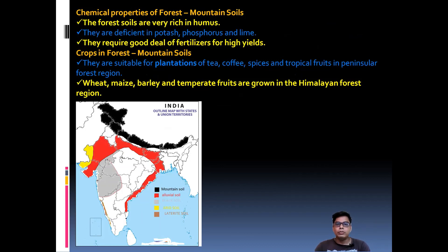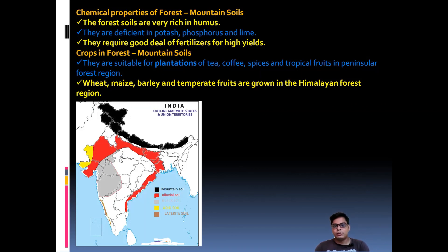Crops in forest and mountain areas: they are suitable for plantation crops like tea, coffee, spices, and tropical fruits in peninsular forests. Wheat, maize, barley, and temperate fruits are grown in the Himalayan forest region. So these are all six types of soil we have discussed. Thank you for watching.